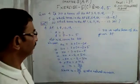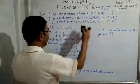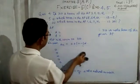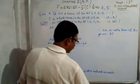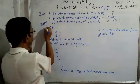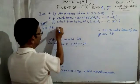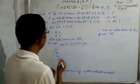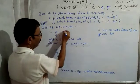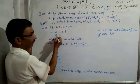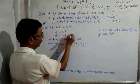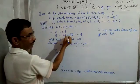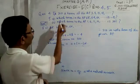Now let us do question number 5, sub-number 1. The AP is 68, 64, 60, ... The first term a = 68, and the common difference d = 64 − 68 = −4 (the bigger number has the minus sign).